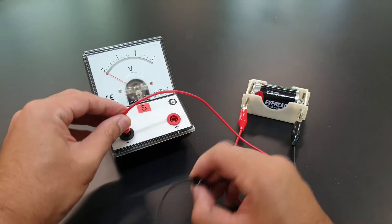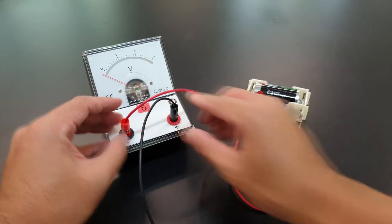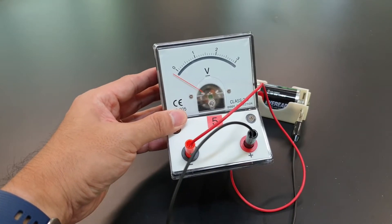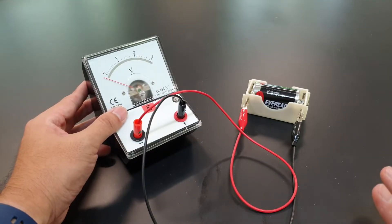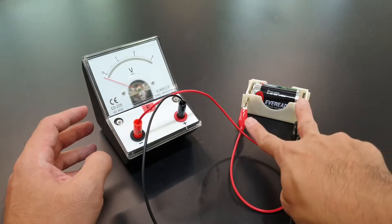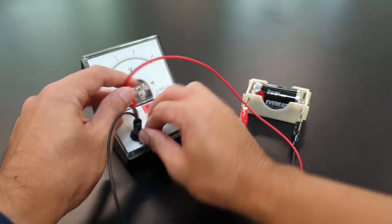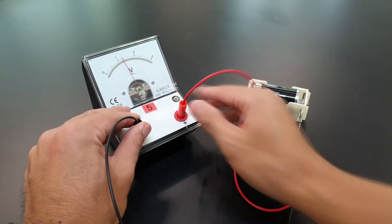What if you are not mindful and then you connect it wrongly as such? You realize that the needle will go below the zero marking. That's fine. What you need to do is just to either swap the connection point of the battery or the voltmeter. So in this case, I swap it back. So this is the correct connection.